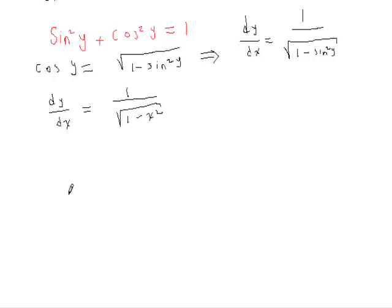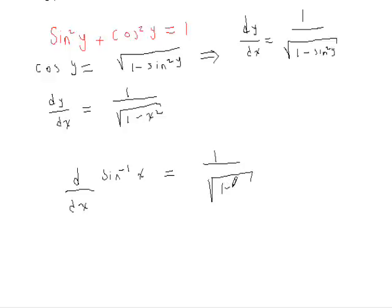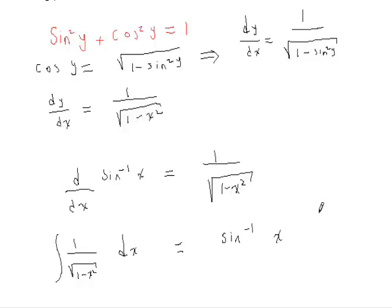So essentially we are done. We have shown that d/dx of sin inverse of x is equal to 1 over the square root of 1 minus x squared. An immediate consequence of this is that the indefinite integral of 1 over the square root of 1 minus x squared with respect to x is nothing but sin inverse of x, assuming that x lies between negative 1 and 1.